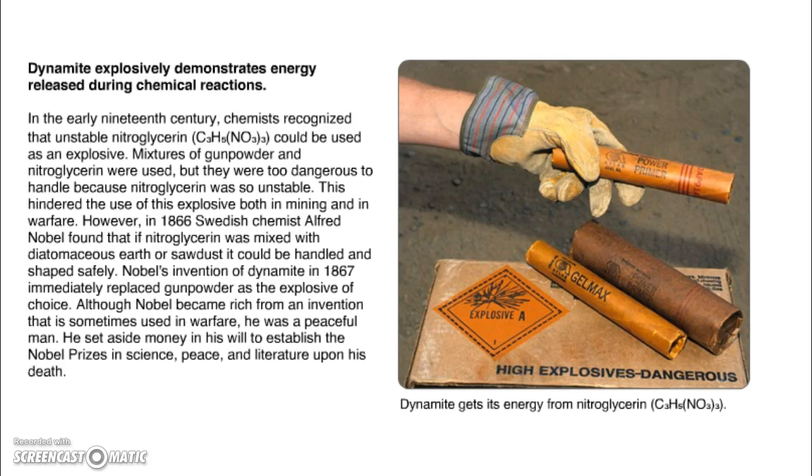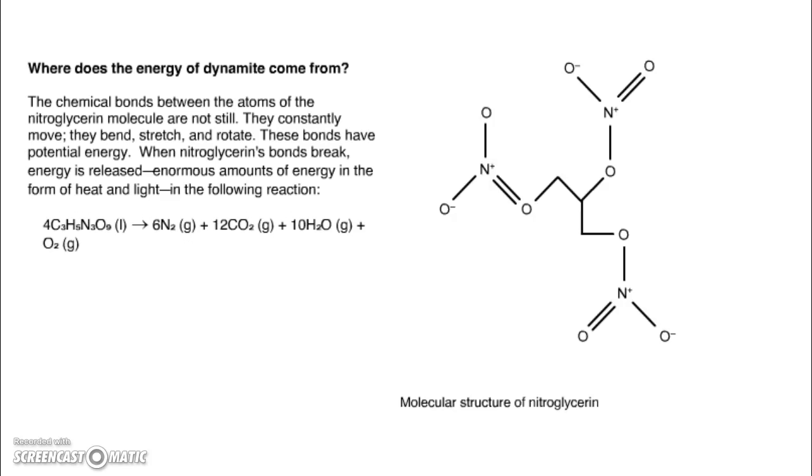However, in 1866, Swedish chemist Alfred Nobel found that if nitroglycerin was mixed with diatomaceous earth, or sawdust, it could be handled and shaped safely. Nobel's invention of dynamite in 1867 immediately replaced gunpowder as the explosive of choice. Although Nobel became rich from an invention that is sometimes used in warfare, he was a very peaceful man. He was really upset that people used dynamite to hurt other people. He set aside his money in his will to establish the Nobel Prizes in science, peace, literature upon his death. So this is the guy that did the Nobel Prizes, which I'm sure you've all heard of, and one of them specifically is for peace.